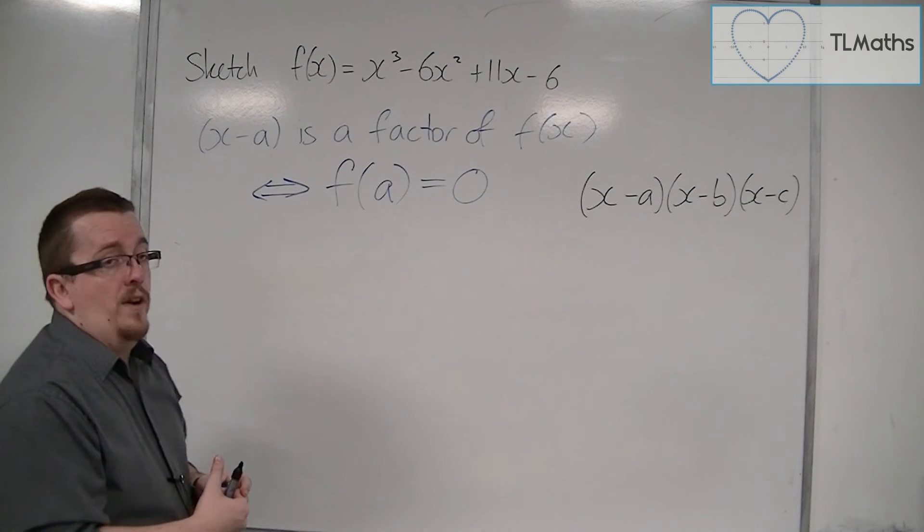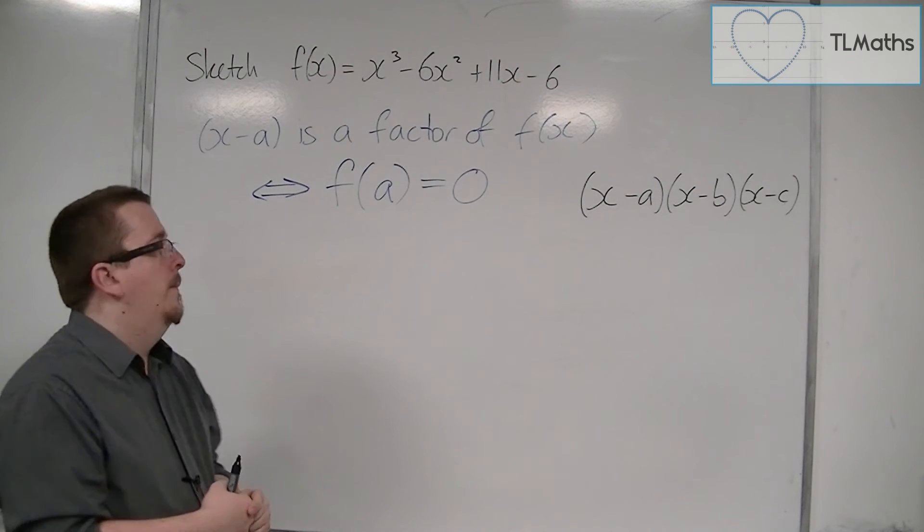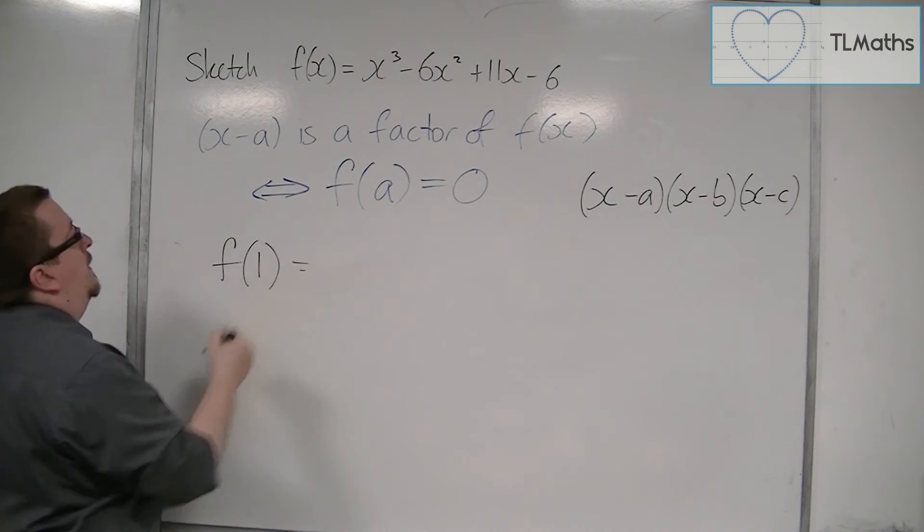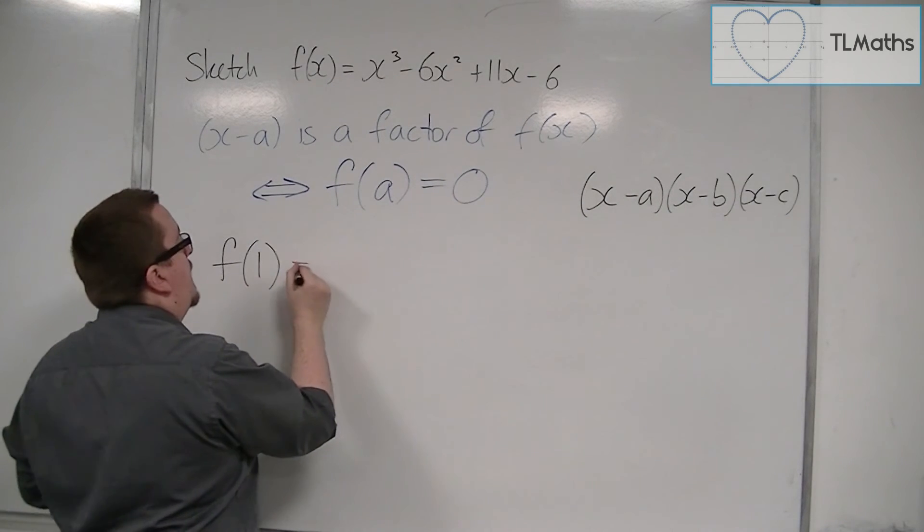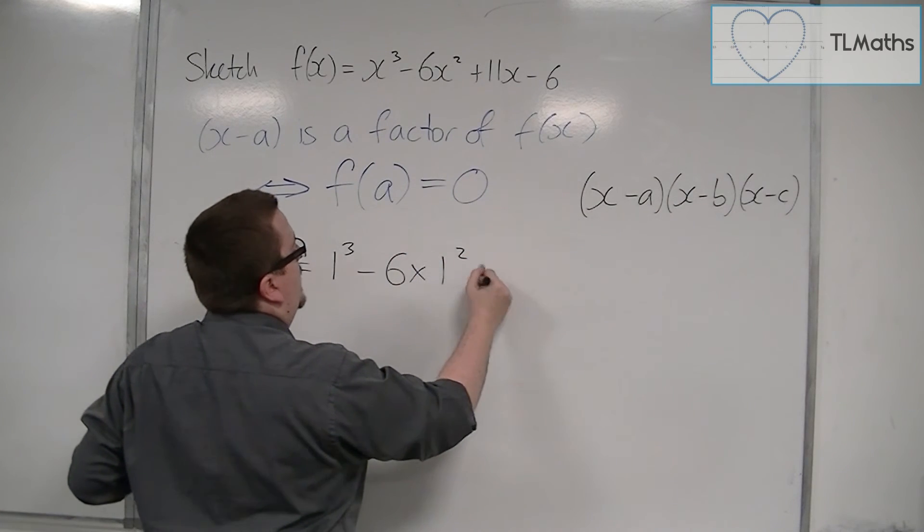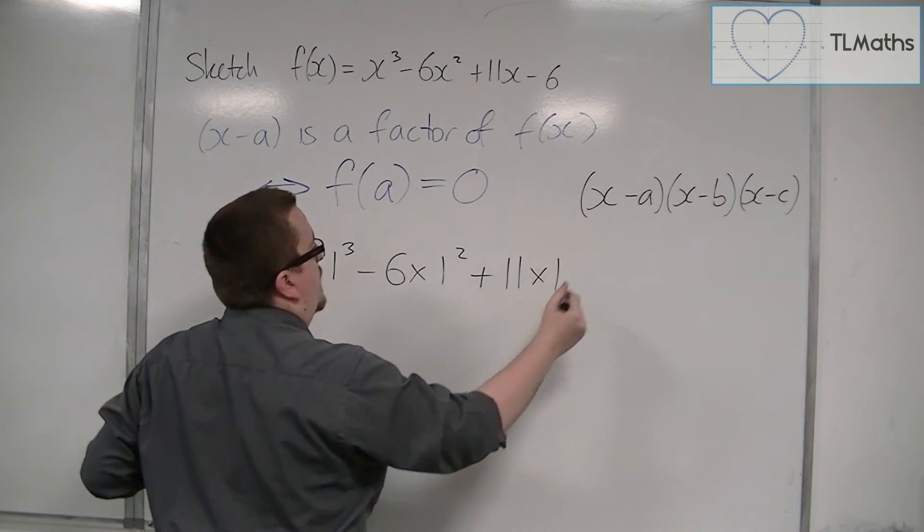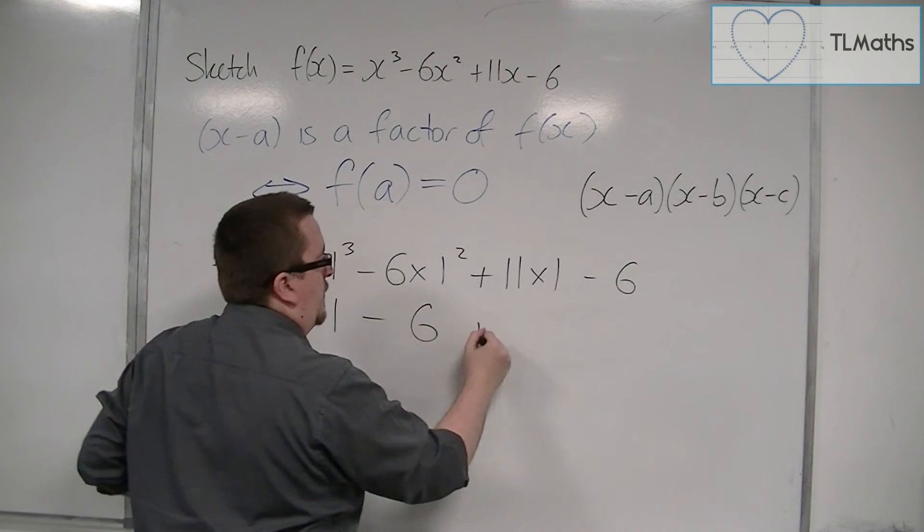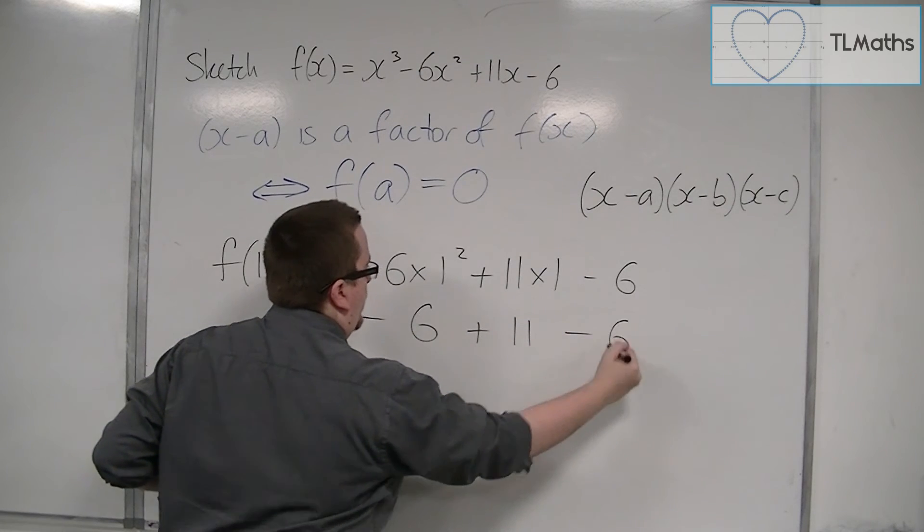Let's try 1, for example. f(1) equals 1³ - 6(1²) + 11(1) - 6, which gives us 1 - 6 + 11 - 6.